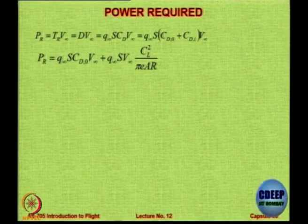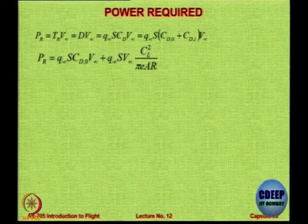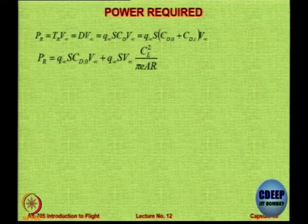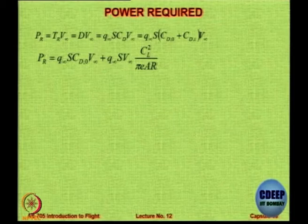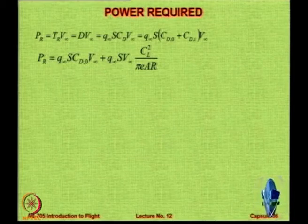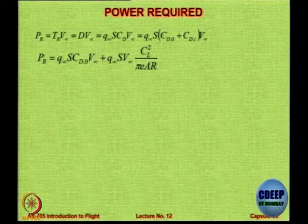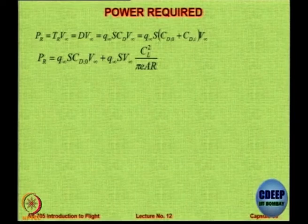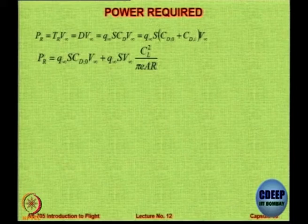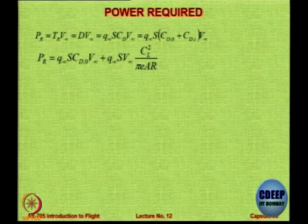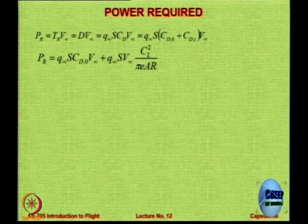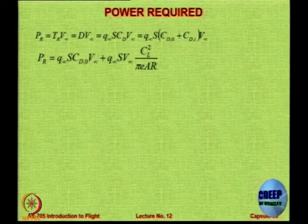CD itself has two components: CD0 (zero-lift drag) and CDI (induced drag component, which is CL²/πeAR). So power required equals Q∞·S·CD0·V∞ plus Q∞·S·V∞·CDI, where CDI = CL²/πeAR. Now we have an interesting task: we have to find the velocity at which the power required is minimum. You have an expression with two terms — the first has V∞ and the second also has V∞ and CL².